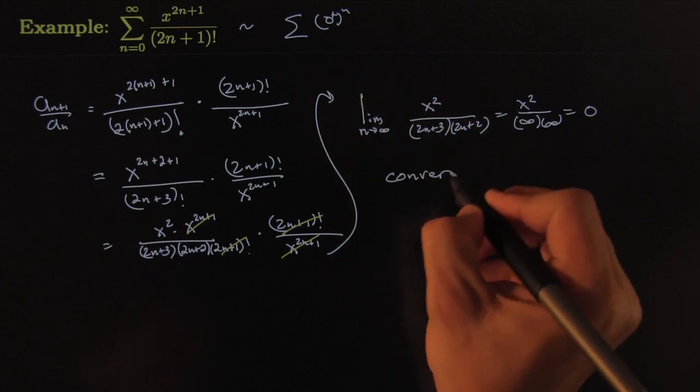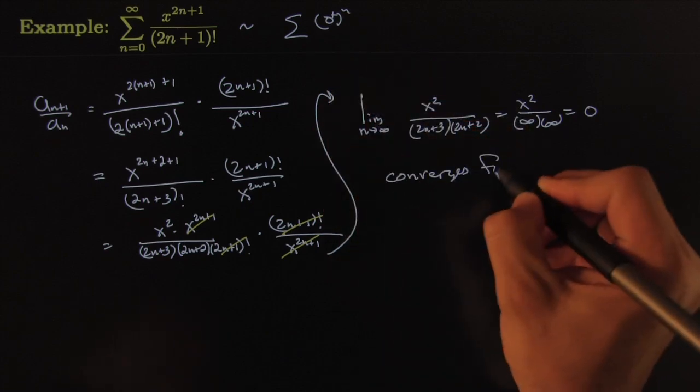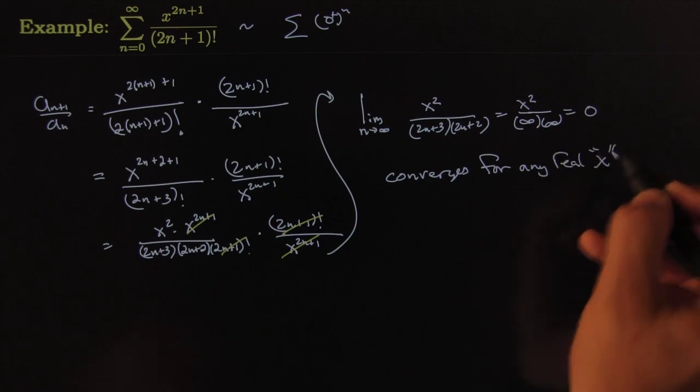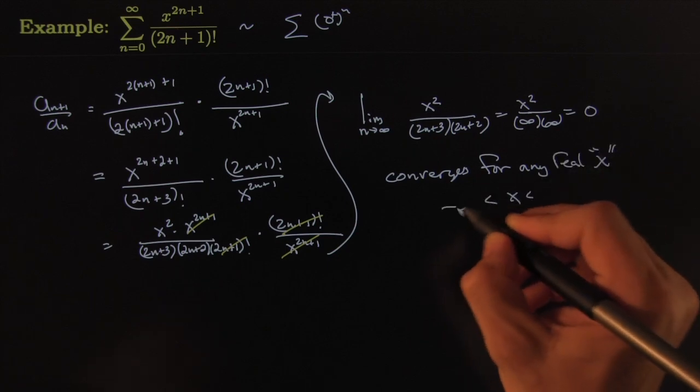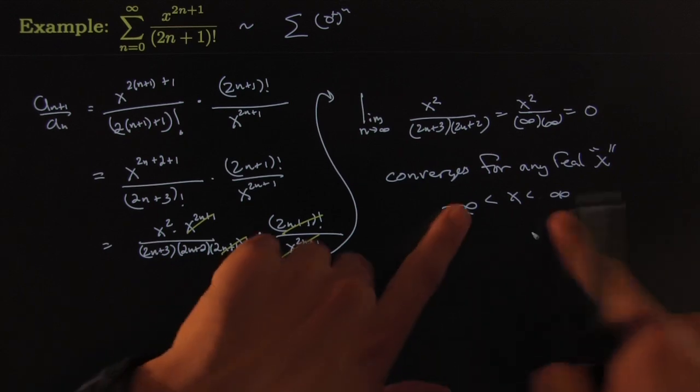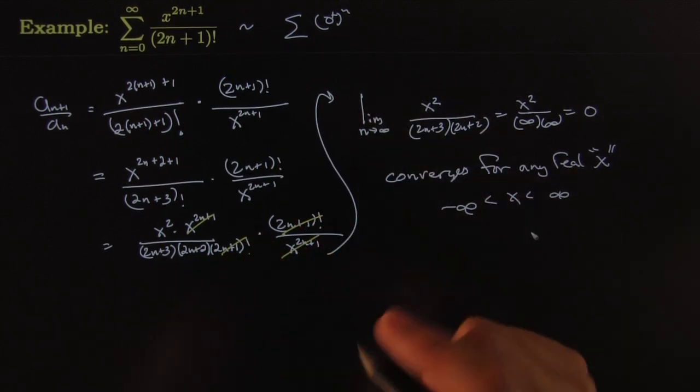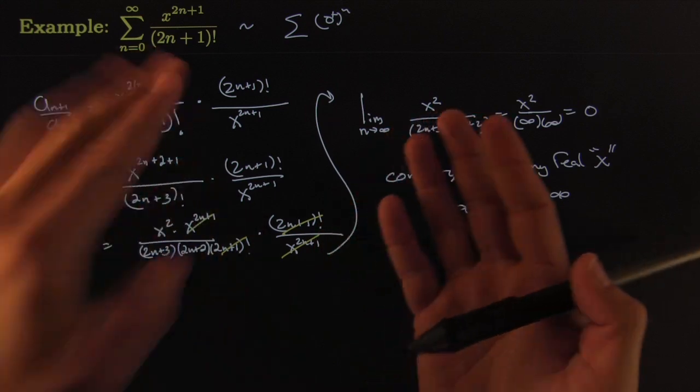So we have that it converges for any real number x, so the interval of convergence would be from negative infinity to positive infinity—of course not including infinity, gotta keep it real. That's nice, that's nice on many different levels.